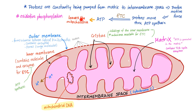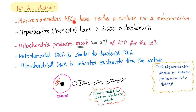ATP formed in the mitochondria leaves the mitochondria to be readily available for the cell's energy needs. This entire process is called oxidative phosphorylation. The outer membrane forms a barrier between the cytosol and the mitochondria and contains enzymes with pores. The inner membrane contains molecules and enzymes for the electron transport chain, such as ATP synthase. Cristae increase the surface area available for the electron transport chain. The matrix is where ATP is generated and contains the Krebs or TCA cycle enzymes. Notably, mature mammalian red blood cells have neither a nucleus nor mitochondria, which is why they produce less energy. Hepatocytes, on the other hand, have more than 2,000 mitochondria per cell.